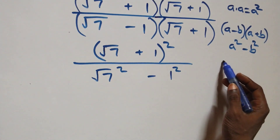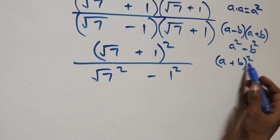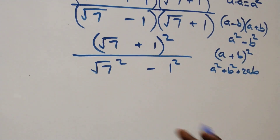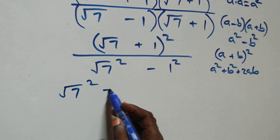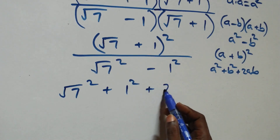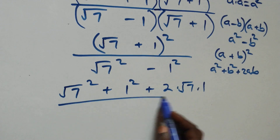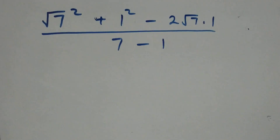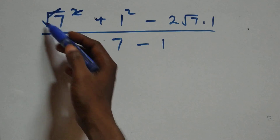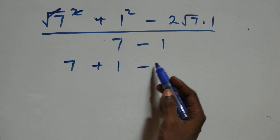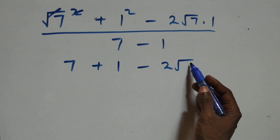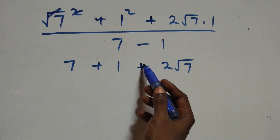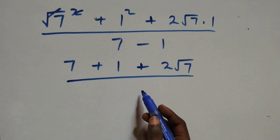Expanding the numerator using (a + b)² = a² + b² + 2ab, we get (√7)² + 1² + 2×√7×1, which is 7 + 1 + 2√7. The denominator simplifies to 7 − 1 = 6.